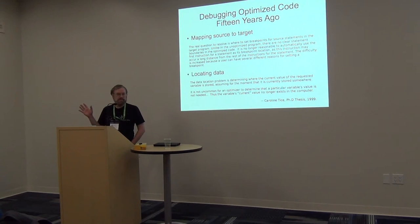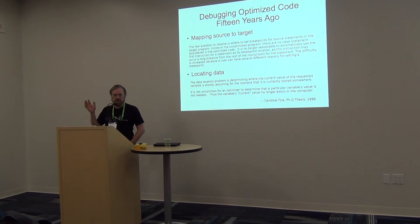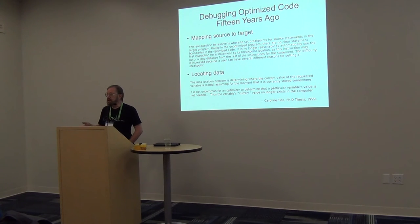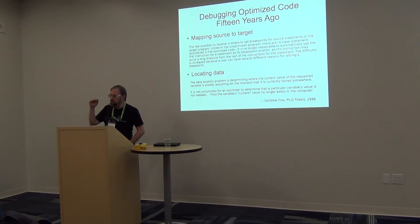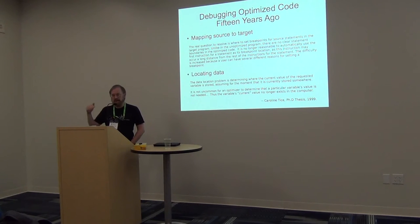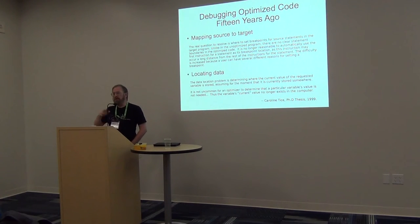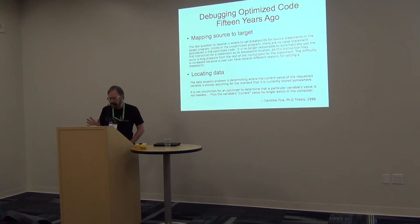That was DWARF 2. We've had DWARF 3, which added location lists, which really did help in allowing a compiler to show where data moved around as the PC value changes — which is good. We also improved a number of things in data description.